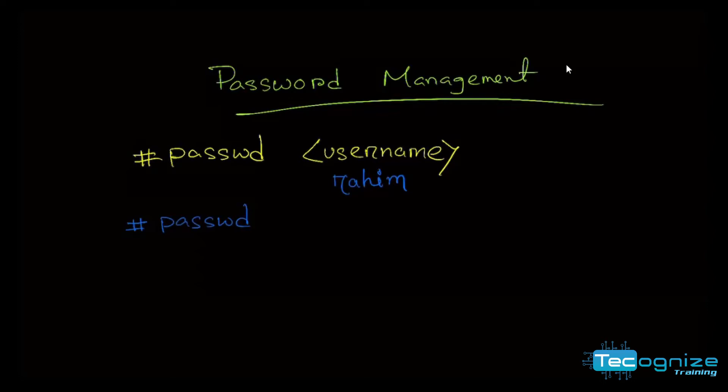The first thing is to use useradd. So when you are using the user for the first time login, you can send the root password — the administrator password — and you can do the first time login. When you are using the password, you can set the password.